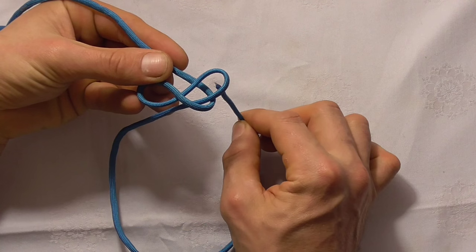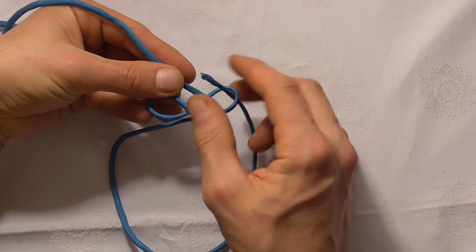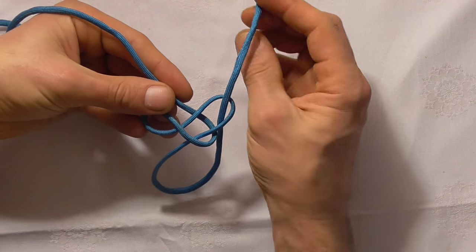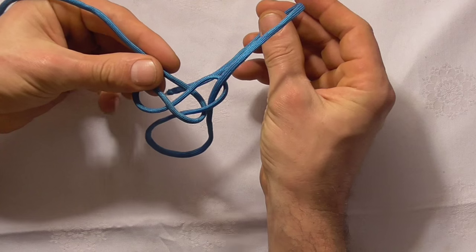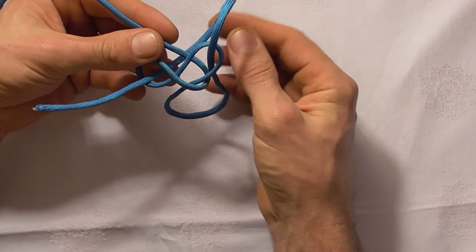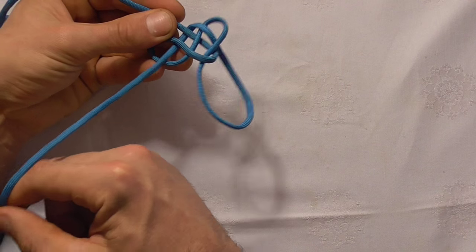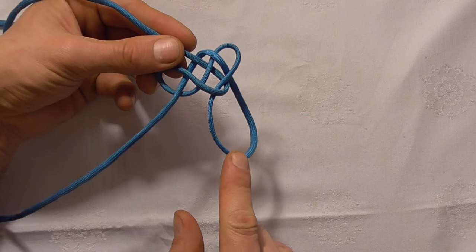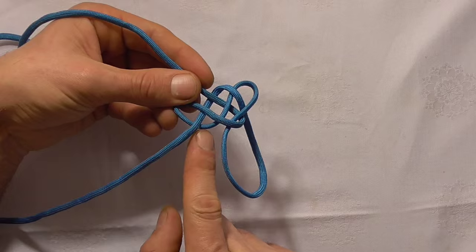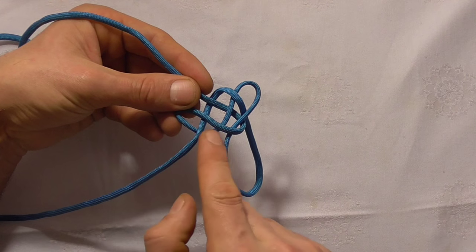Take the end up through that right-hand loop, underneath, and then up through the left-hand loop. Now this is going to form a petal, and this loop here is going to form a petal too.